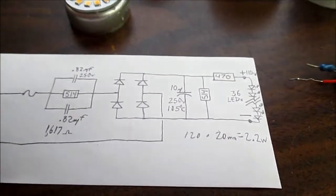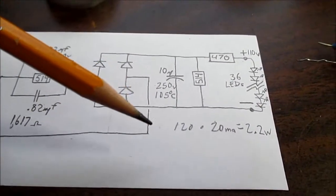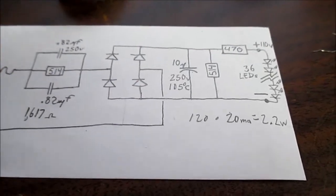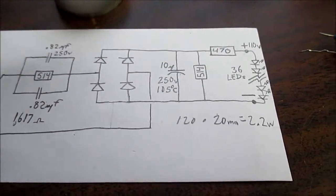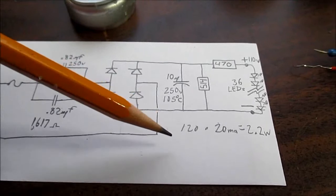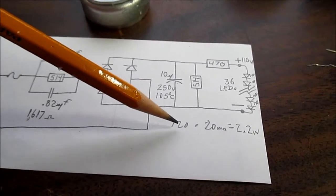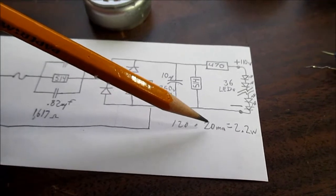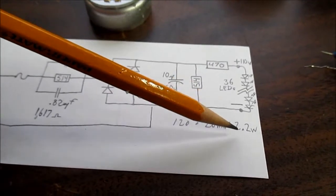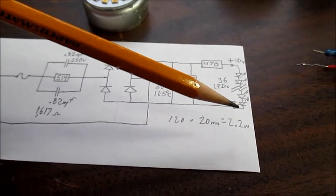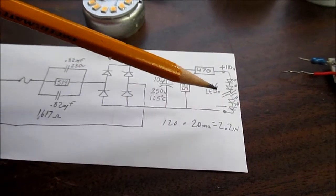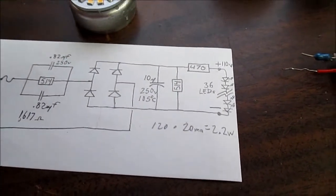How much current goes through the thing? I calculate those are just 20 milliamp LEDs. So the whole circuit, 120 volts times 20 milliamps, about 2.2 watts. And we were measuring 2.3. Pretty close.